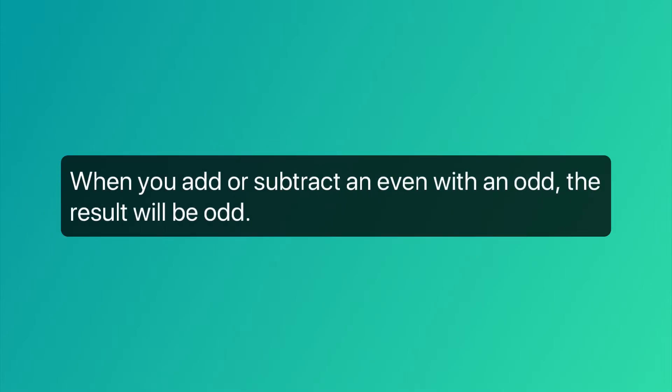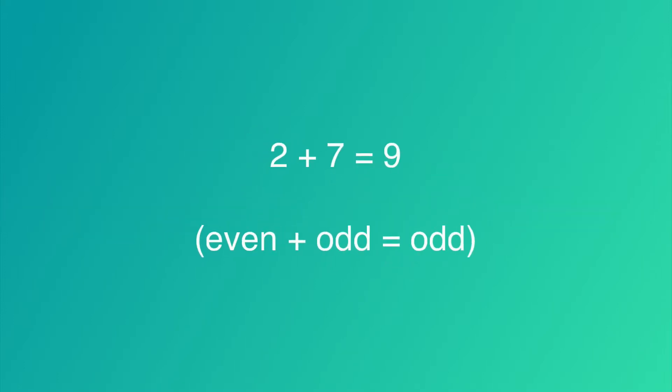When you add or subtract an even with an odd, the result will be odd. 2 plus 7 equals 9. That's an even and an odd, which equals odd. 5 minus 4 equals 1. That's an odd and an even, which equals odd.